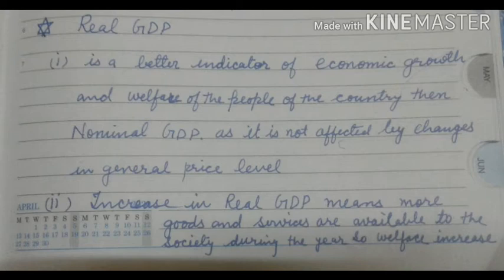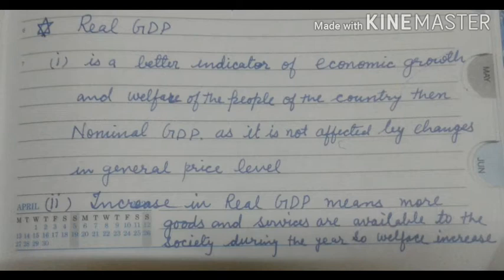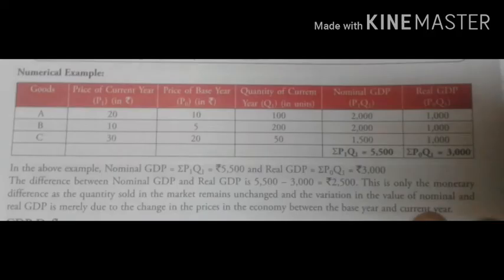Secondly, real GDP means more goods and services are available for the country and society during the year. This shows that more final goods and services are available in the country for society — it means welfare has increased.